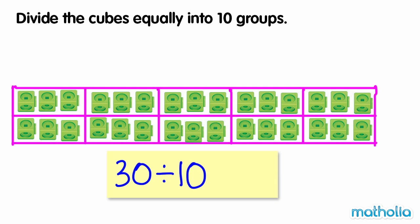We have used up all of the cubes. We have divided 30 cubes into 10 groups equally. In each group there are 3 cubes. So 30 divided by 10 equals 3.